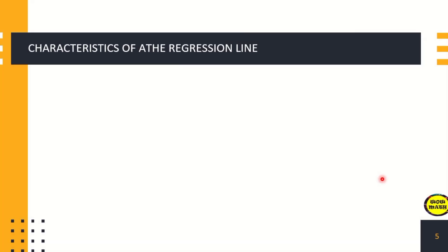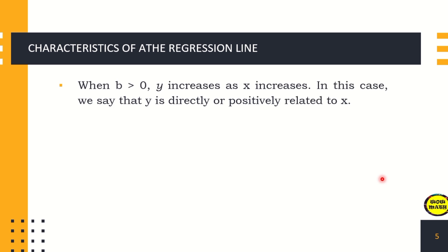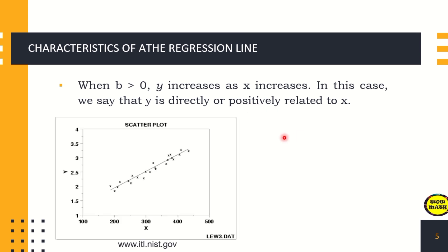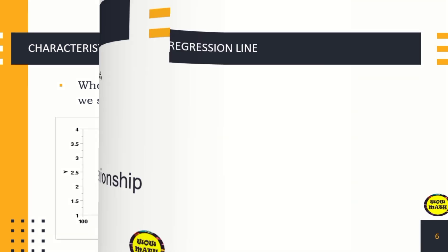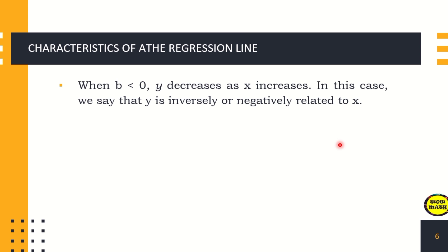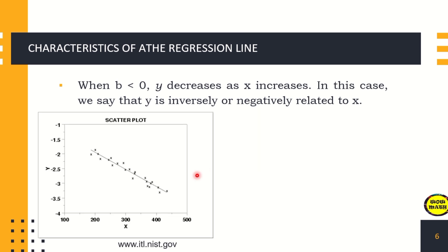The characteristics of the regression line: First, when b is greater than zero, y increases as x increases — we say y is directly or positively related to x. As seen on the scatter plot, this represents a positive linear relationship. Second, when b is less than zero, y decreases as x increases — we say y is inversely or negatively related to x. This is the negative linear relationship shown on the scatter plot.